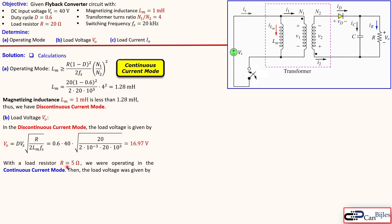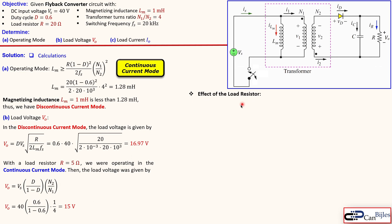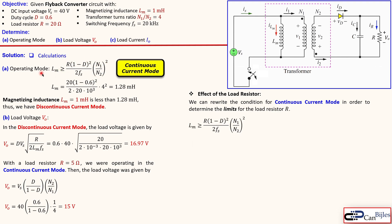As a summary comparison: with a load resistor of 5 Ω we were in continuous current mode and the load voltage was exactly 15 V. By increasing the resistor to 20 Ω we enter discontinuous current mode and the output voltage changes to approximately 17 V. We can also rewrite the CCM boundary condition to isolate R, showing the maximum resistor allowed to remain in CCM.